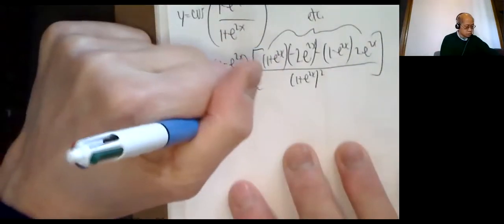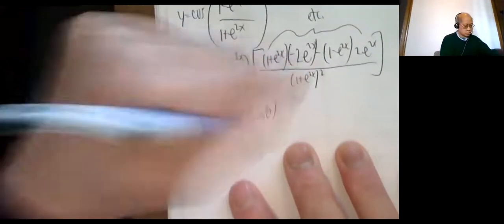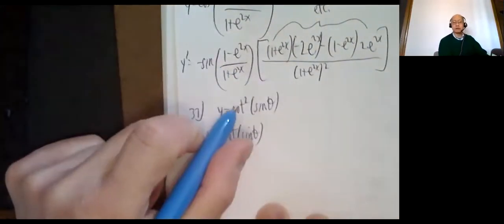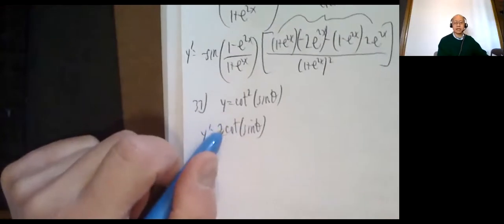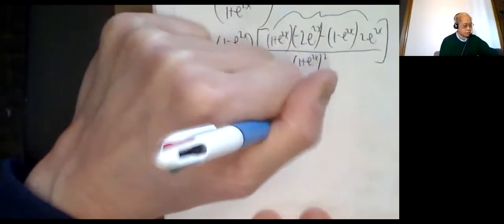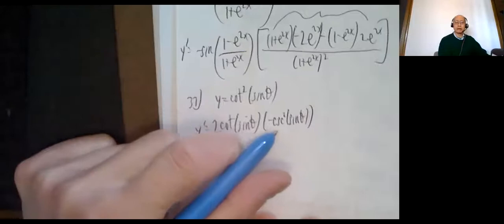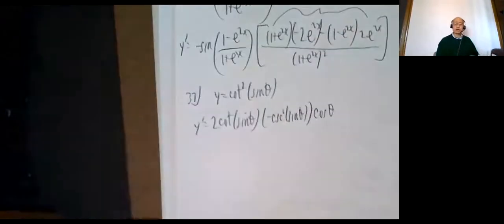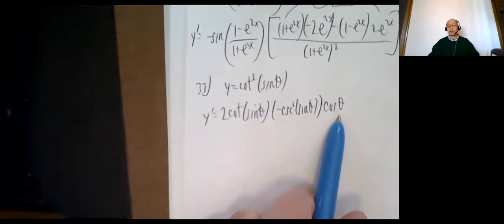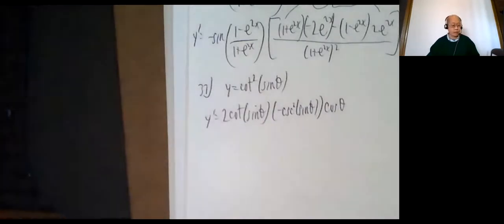3.4 number 37: cotangent squared of (sin θ). The outermost function is a squaring function. So: 2 · cot(sin θ) · [derivative of the inside]. Derivative of cot(sin θ) is −csc²(sin θ) times the derivative of sin θ, which is cos θ. So the full answer is 2 cot(sin θ) · (−csc²(sin θ)) · cos θ. Note you might ask if you should keep differentiating — the derivative of θ is 1, so you stop there.